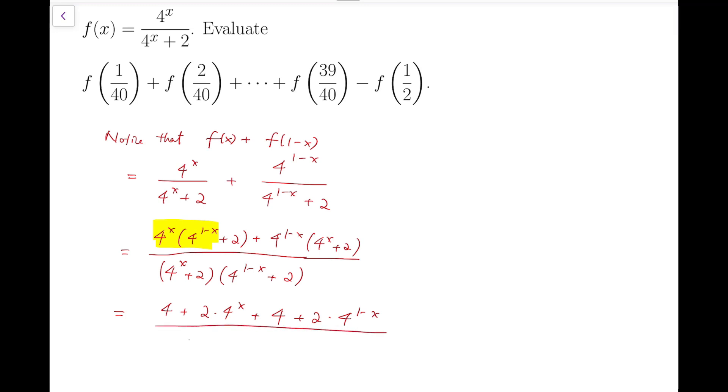And for the denominator, you will have 4 plus 2 times 4 to the x plus 2 times 4 to the 1-x plus 2 times 2, which is 4.